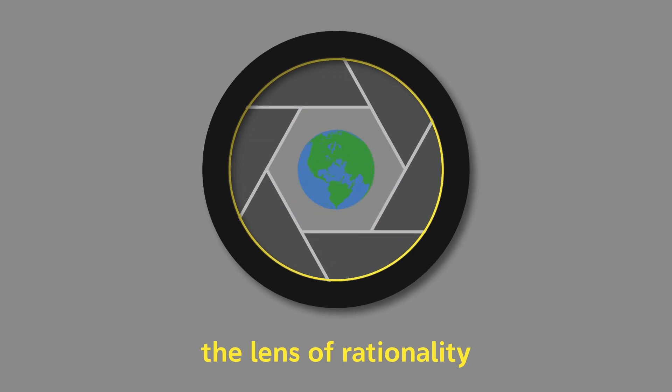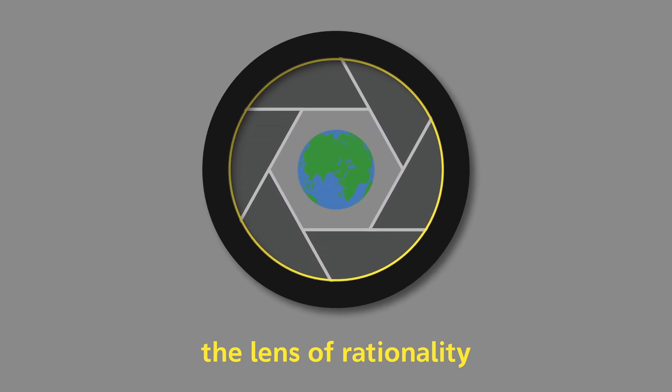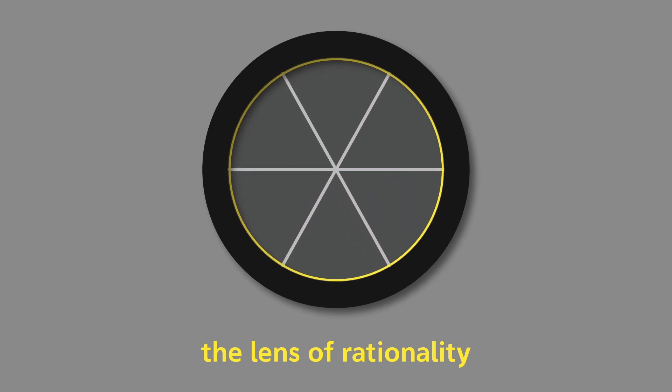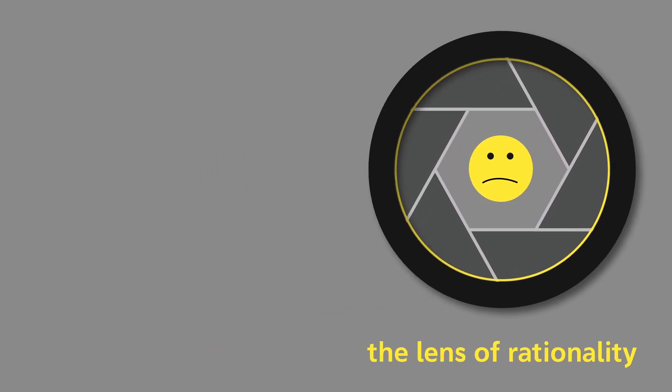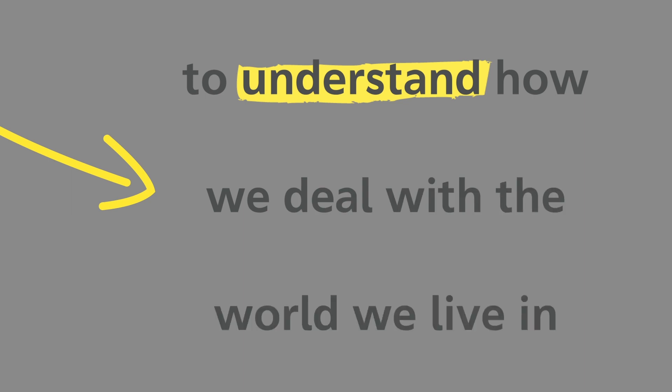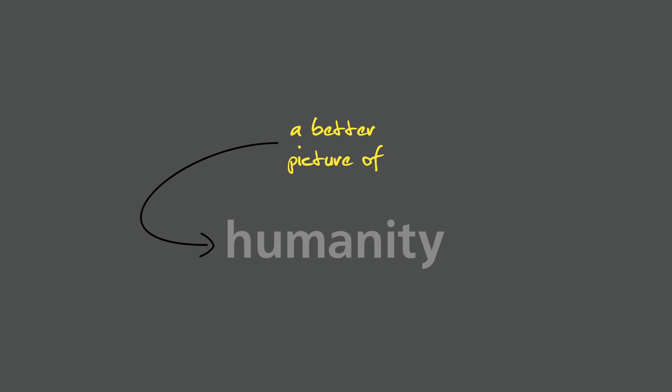When we view the world through the lens of rationality, we set ourselves up for failure. We expect too much of ourselves, we make poor decisions, and we're left unhappy. But we don't have to do this. Once we recognize the limits of our rationality, we can start to understand how we deal with the world we live in. This allows us to paint a more realistic picture of human beings. And once we accept our nature, we can work with it rather than against it.